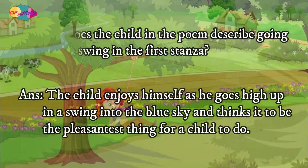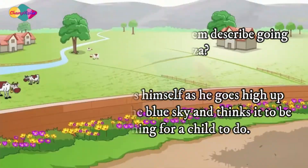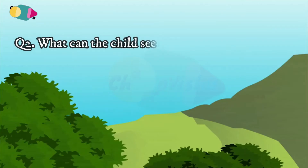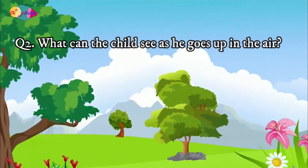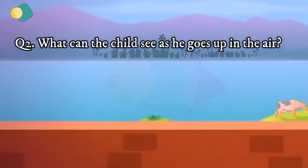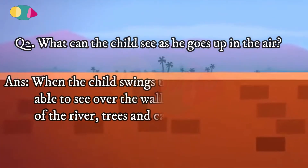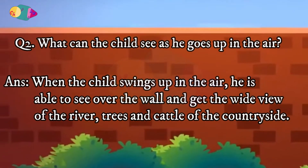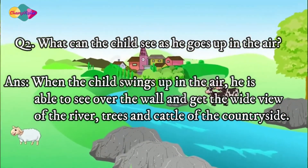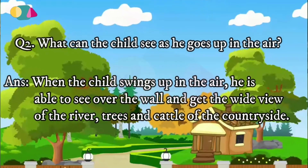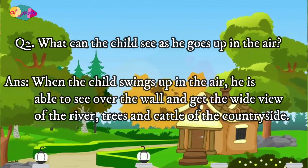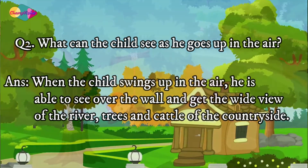Question 2: What can the child see as he goes up in the air? The answer is, when the child swings up in the air, he is able to see over the wall and get the wide view of the river, trees, and cattle of the countryside.